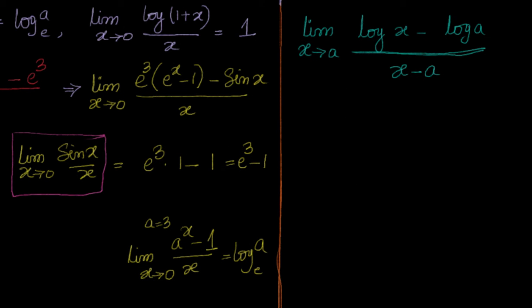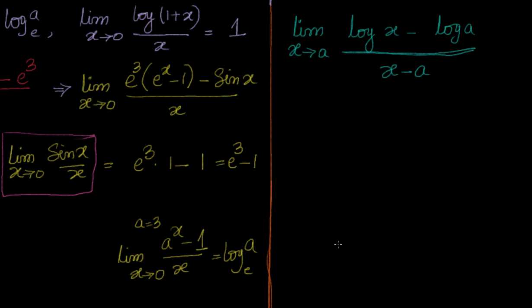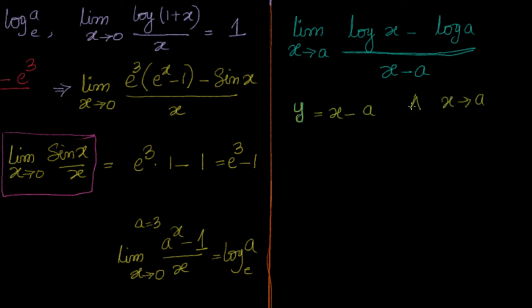Let's go to the next one. Limit x tends to a of log x minus log a divided by x minus a. As we discussed in earlier sessions, whenever we see a non-zero value but the formula needs x tending to 0, we immediately substitute with another variable. If I take y equal to x minus a, then as x tends to a, y tends to 0.